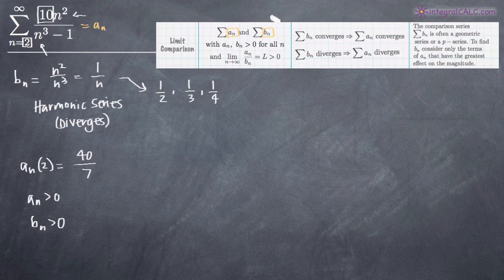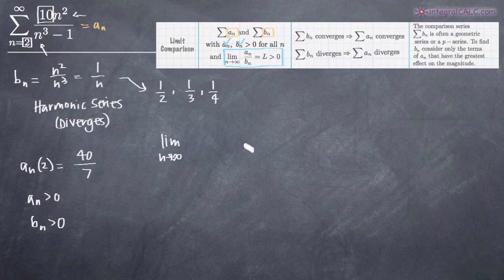We can see that both of those things are true, so we can check off that a sub n is greater than zero and b sub n is greater than zero. Now we need to find L — we're going to take the limit as n approaches infinity of our original series a sub n divided by our modified series b sub n, and whatever we get as our result we'll call L. So we're going to take the limit as n approaches infinity of a sub n, which is 10n squared divided by n cubed minus 1, divided by b sub n, which we know to be 1 over n.